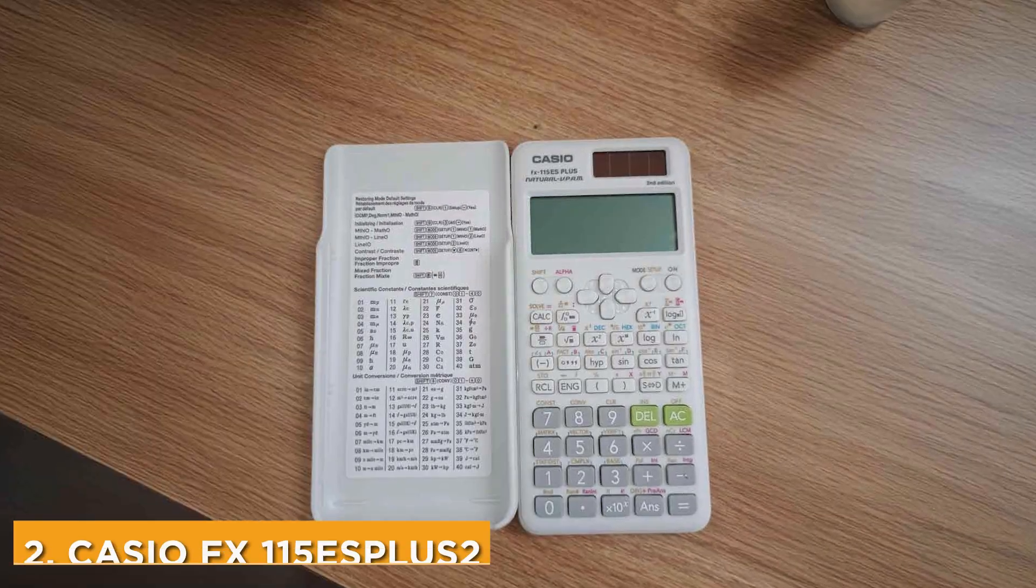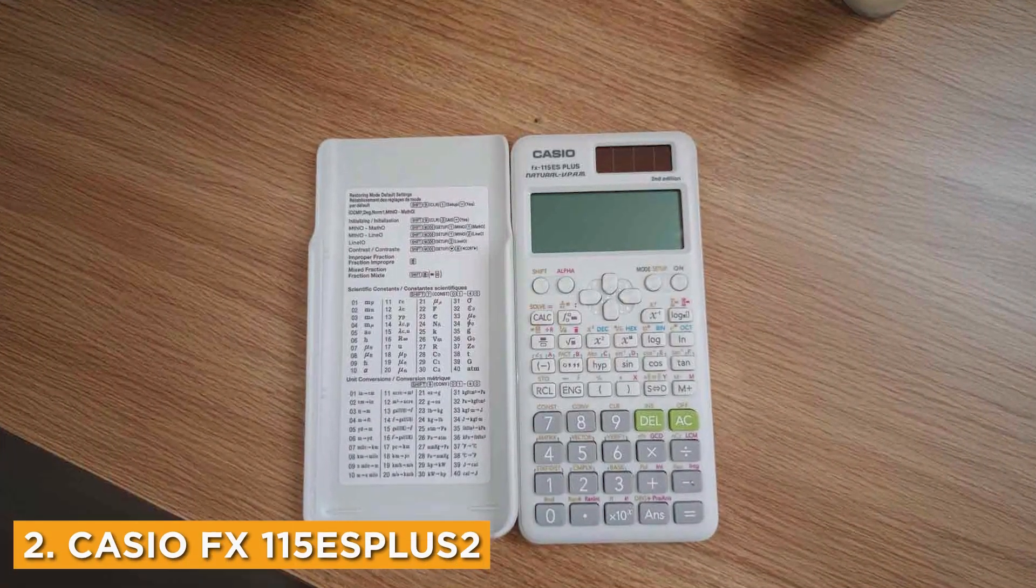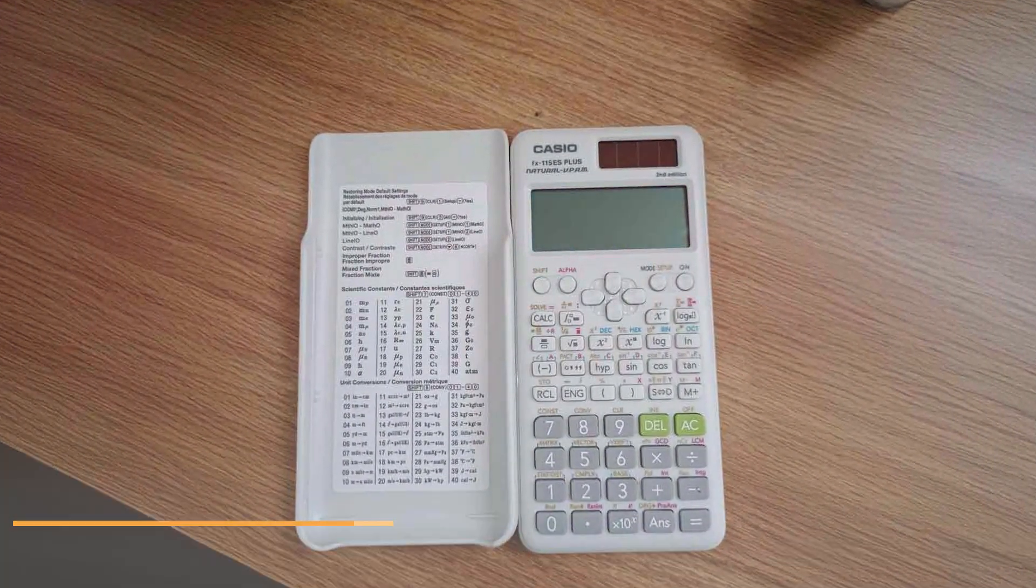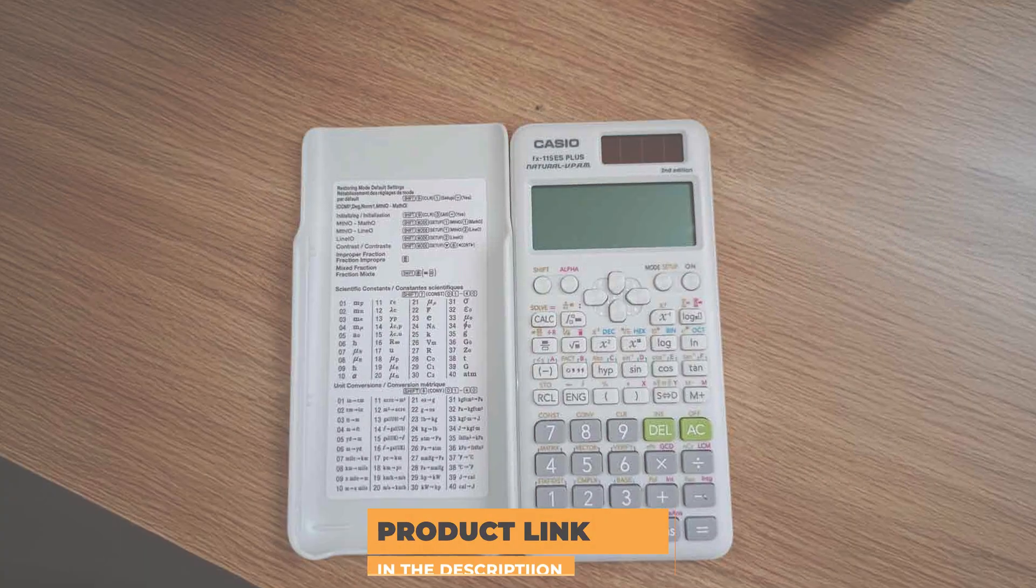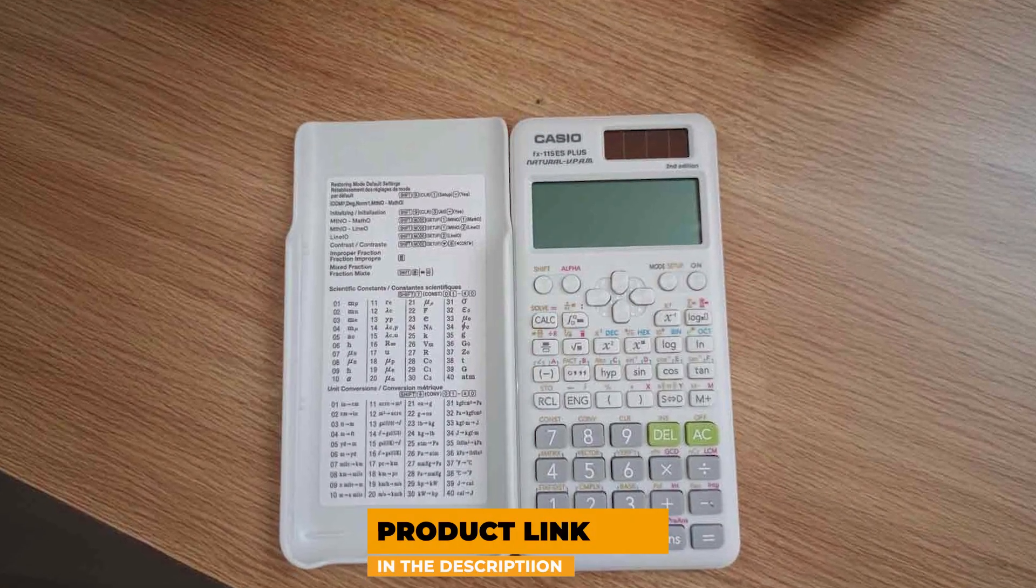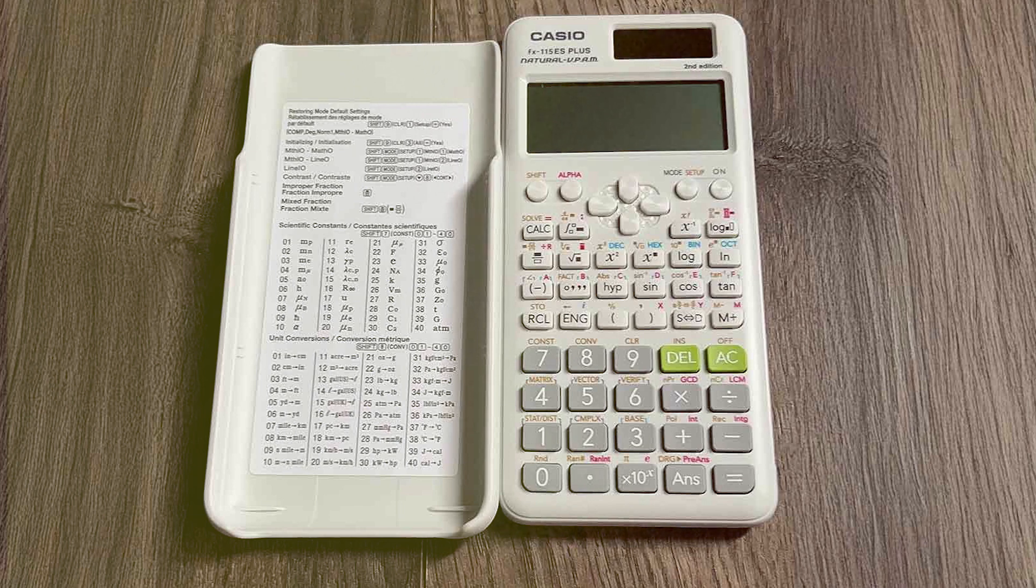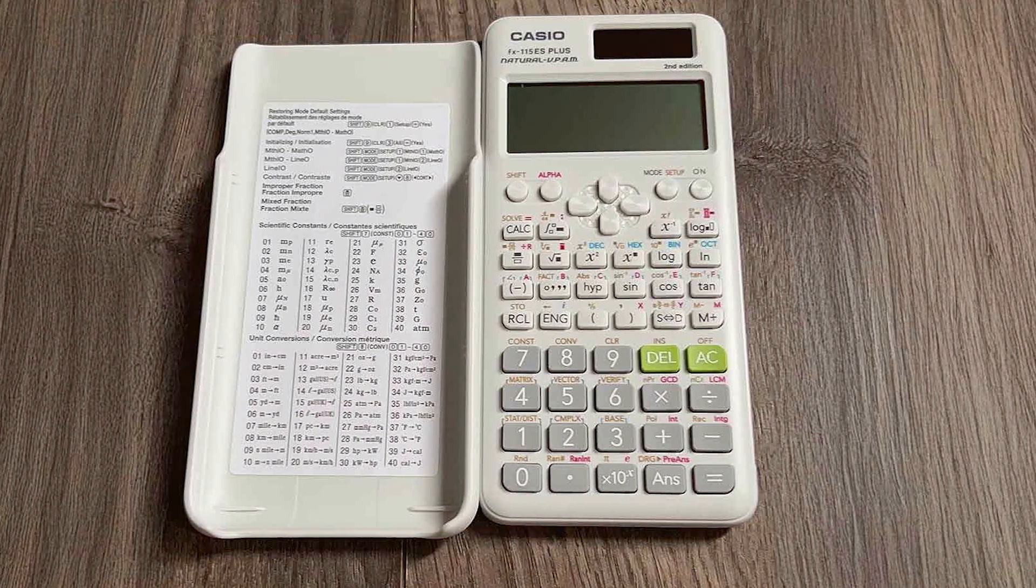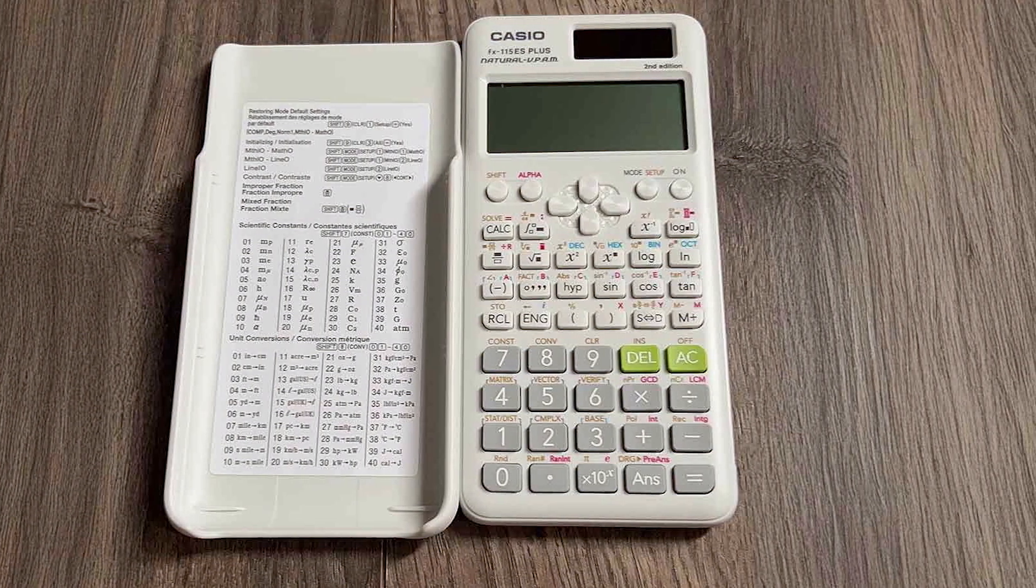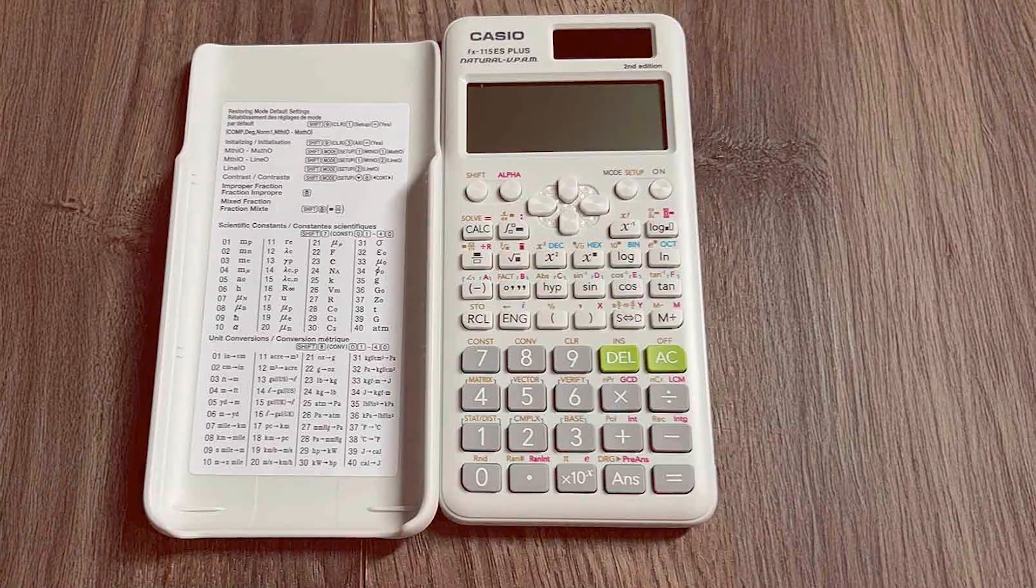Number 2: Casio FX-115 ESPLUS 2nd Edition Advanced Scientific Calculator, a powerful tool that stands out in the world of scientific calculators. Its design features a slim profile with a large, natural textbook display, which makes reading and inputting equations much more intuitive.